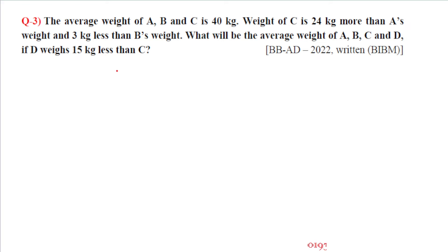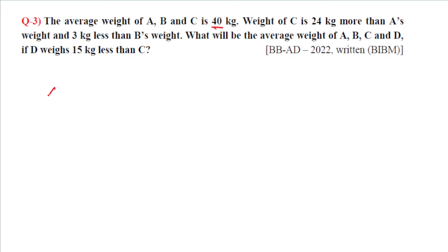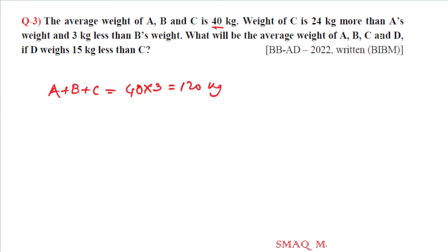What will be the average weight of A, B, C, and D if D weighs 15 kg less than C? The total of A plus B plus C equals average of 40 times 3, which is 120 kg. C is 24 kg more than A, and B is 3 kg more than C.